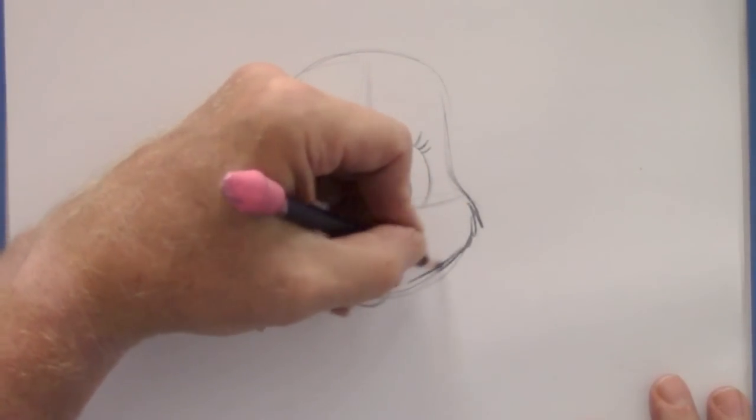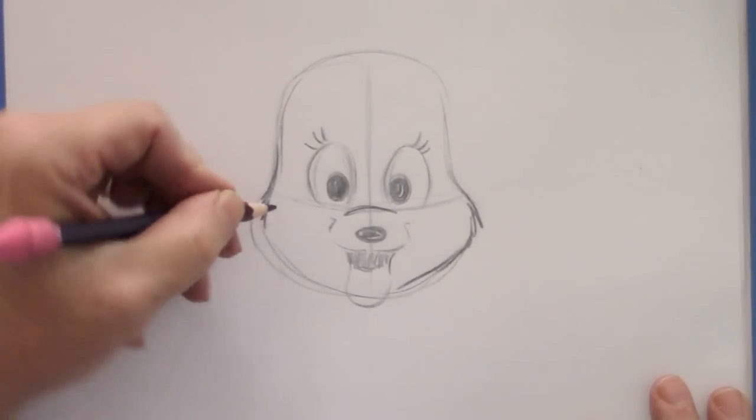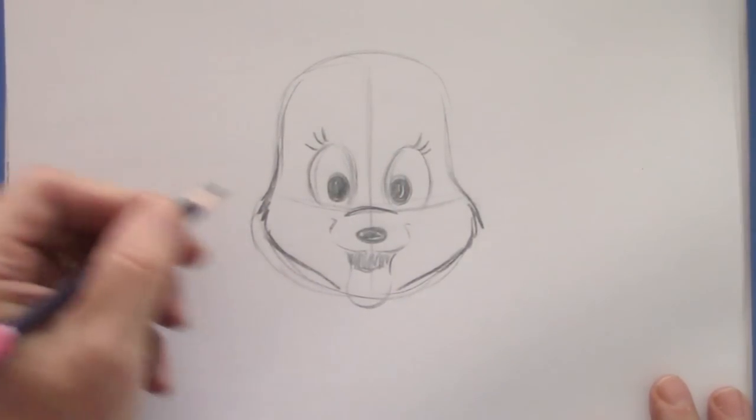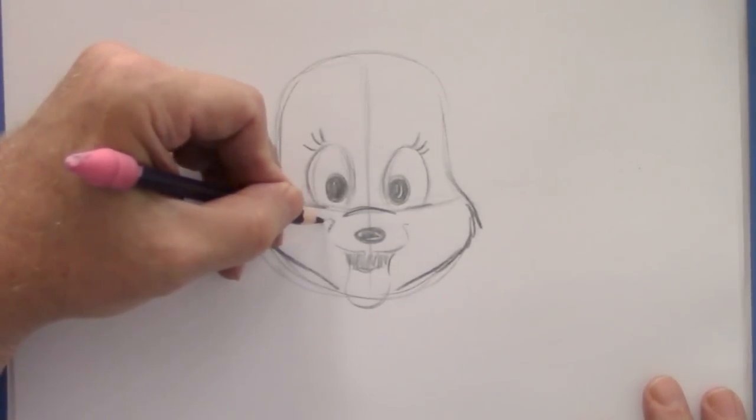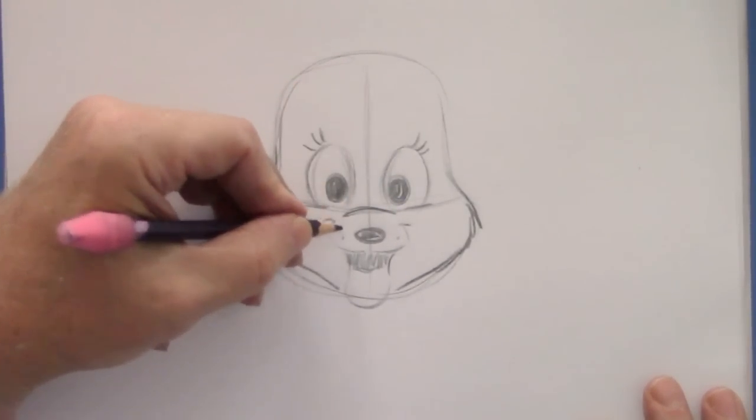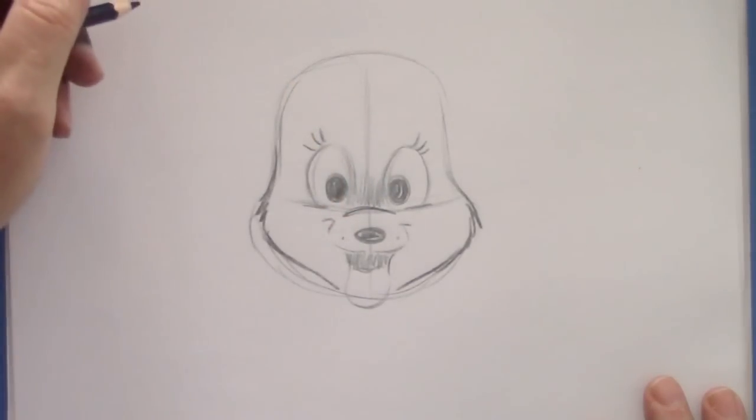Now let's bring that cheek down here. And curve it here. Underneath the tongue like so. A little bit of cheeks right here. A couple of dots for the whiskers and we will add a little shading.